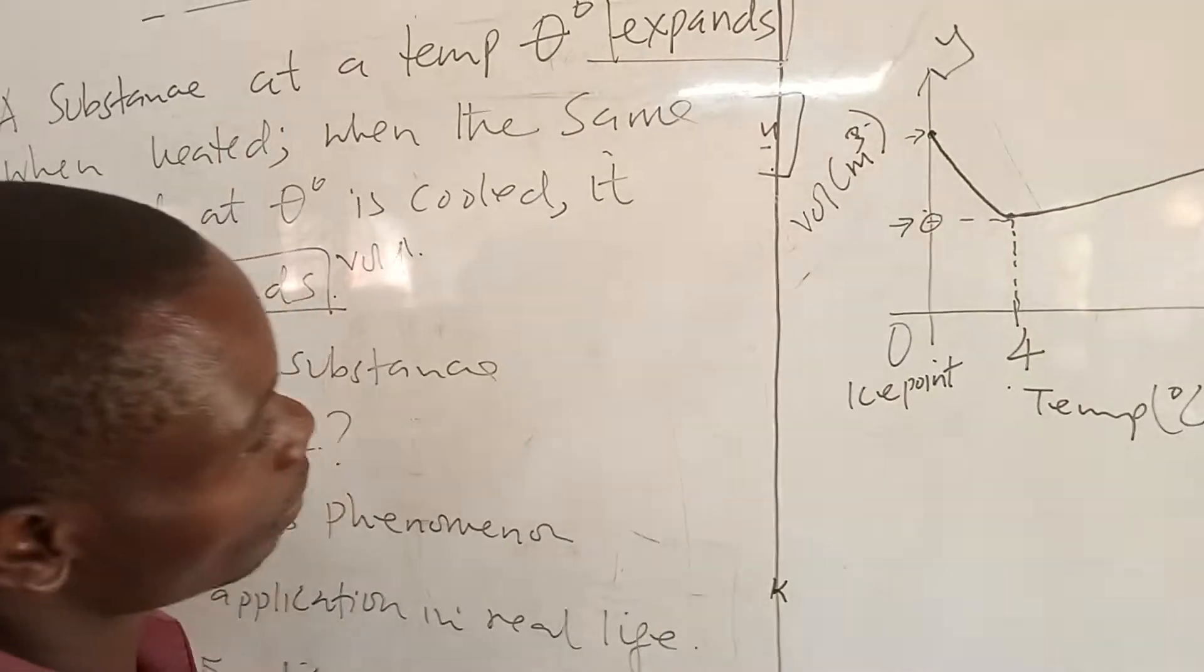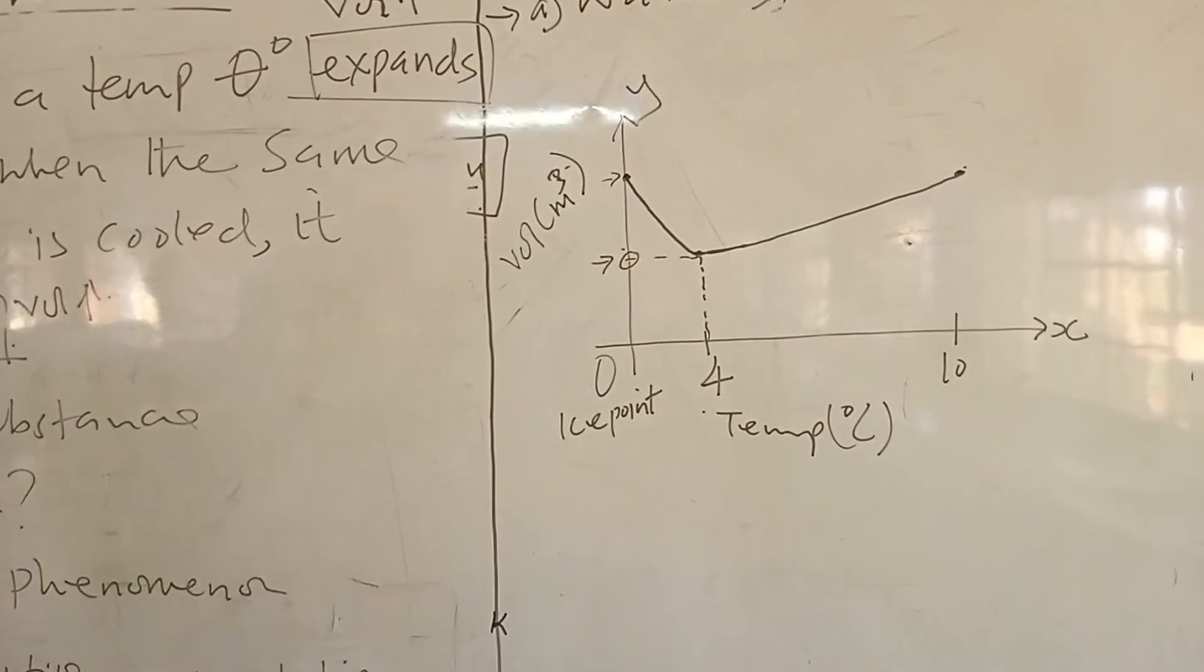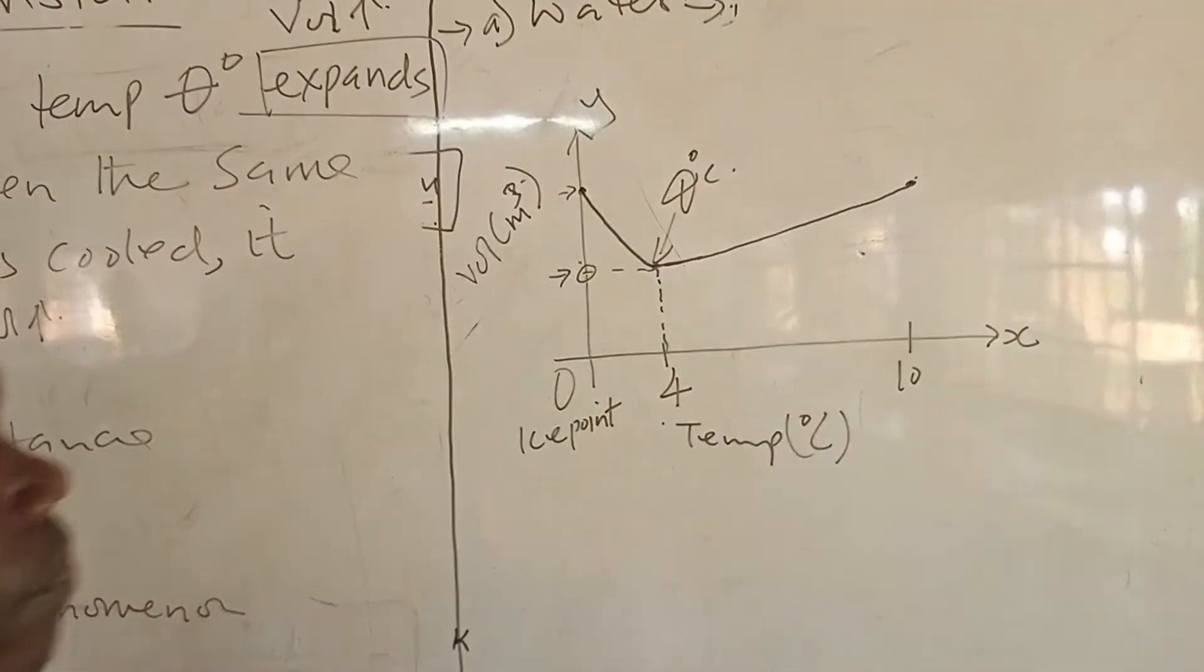Now, I can represent this statement in terms of a diagram. The question was asking theta. So, theta is this temperature here, 4 degrees Celsius. This is the original temperature past which the water begins to expand in both directions.